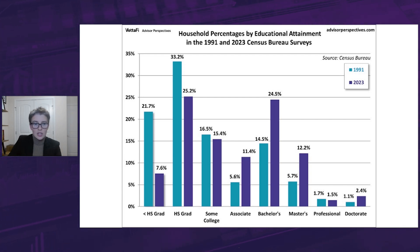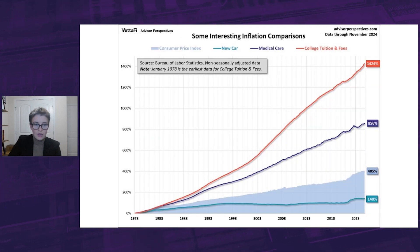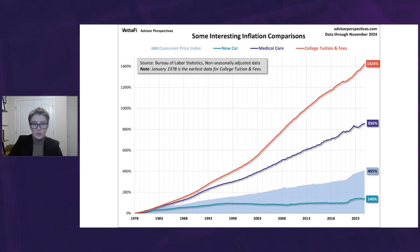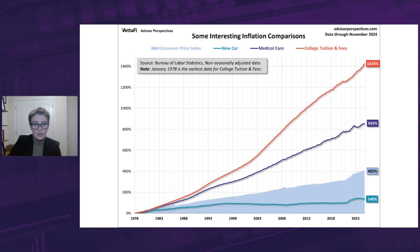But of course, the cost of post-high school education is substantial. Here's a snapshot of some inflation comparisons since 1991. Yes, advanced educational attainment correlates with higher household incomes, but the cost of that education has soared, even more than medical care or a new car.